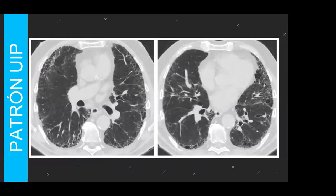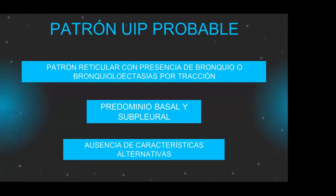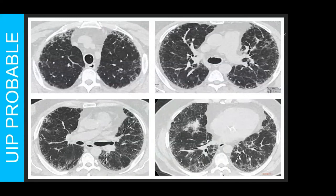¿Cuándo tengo una UIP probable? Tengo predominio de bases y un patrón heterogéneo, pero no tengo panelización. Si agrego panelización, deja de ser probable y pasa a ser UIP definida. Los otros signos de fibrosis presentes incluyen septos o dilataciones bronquiectásicas y bronquiolectásicas por tracción. El patrón es muy parecido a la UIP definida, siendo la única diferencia la ausencia de panelización.